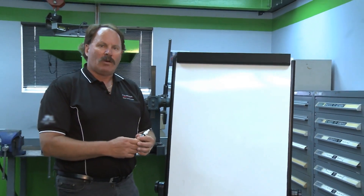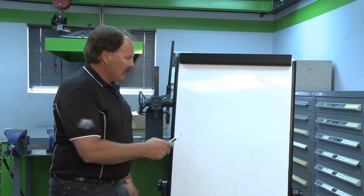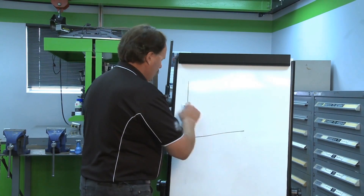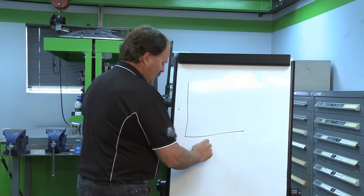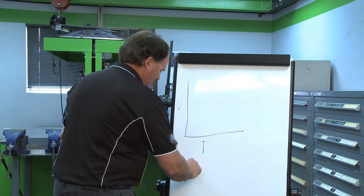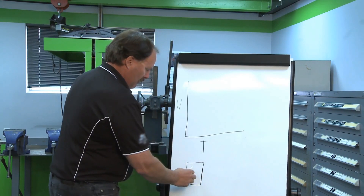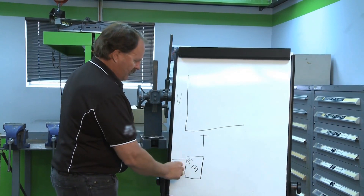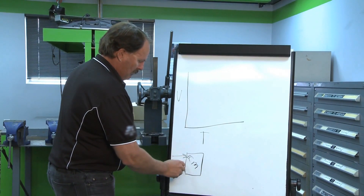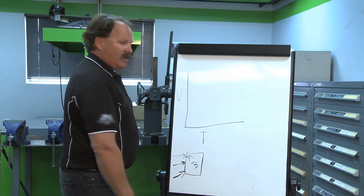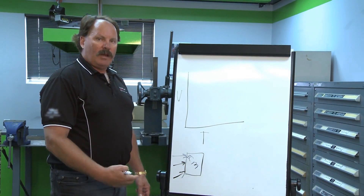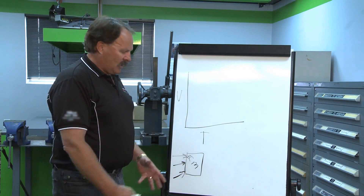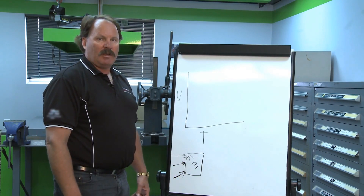Alright, diesel engine 101. We're going to talk about voltage and we're going to talk about time — this is voltage and this is time. We've got an ECM here that has all kinds of inputs from the various sensors: your throttle pedal, air temperature, boost pressure, water temperature. There are all kinds of inputs into the modern ECM in an engine.